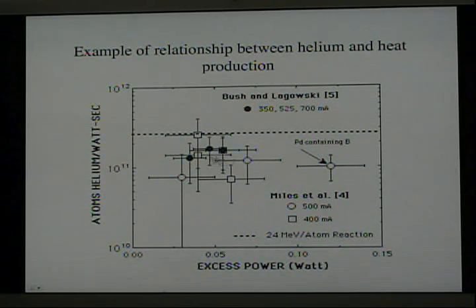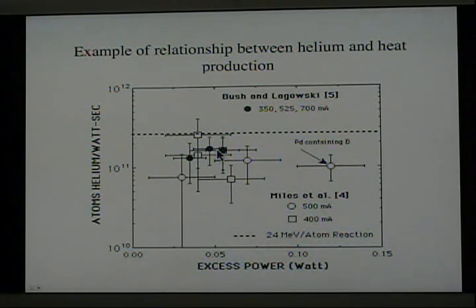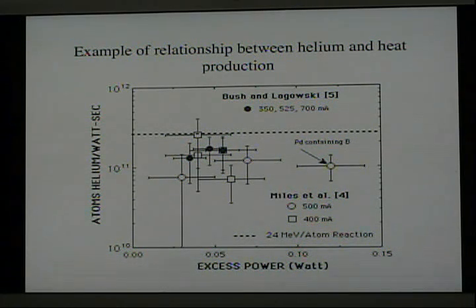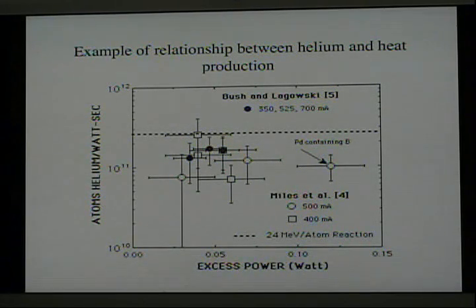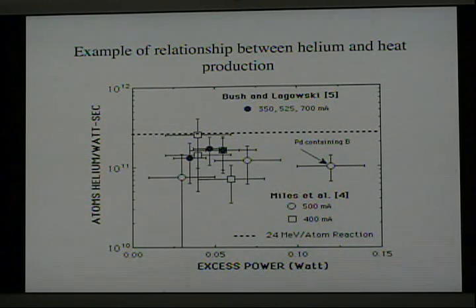Notice that the data fall in a region about 50% below this line. In other words, half the energy is missing. This occurs because the helium was measured only in the gas — any helium that remained within the palladium would not be measured. This is exactly what you'd expect if a nuclear reaction took place on the surface of the palladium. Half of the energetic helium would go into the liquid and then into the gas where it would be collected, and the other half would go into the palladium where it would be captured and not measured.